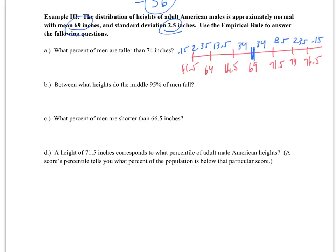So the question asks, what percent of men are taller than 74 inches? So if I look at my numbers, I can add 2.35 plus 0.15 and I get 2.5%. The middle 95% of the data, that is going to be within 2 standard deviations of the mean, which in this case would be from 64 inches to 74 inches. What percent of men are shorter than 66.5 inches? I would add up all of those percentages, which would be 0.15, 2.35, and 13.5, giving us 16%.